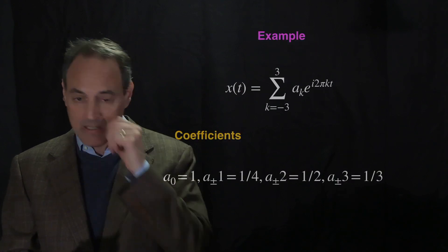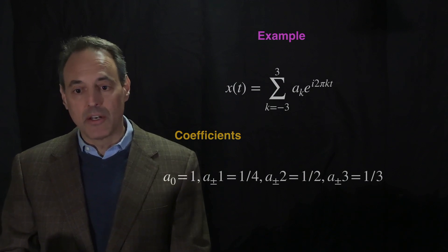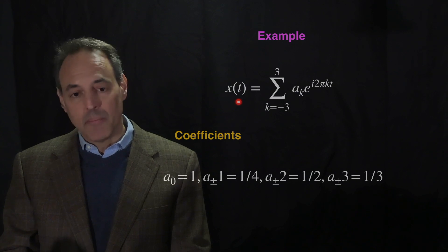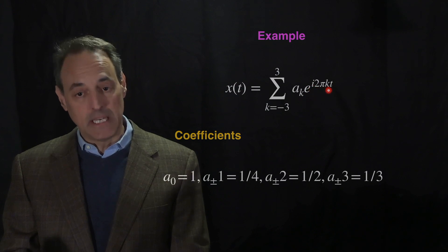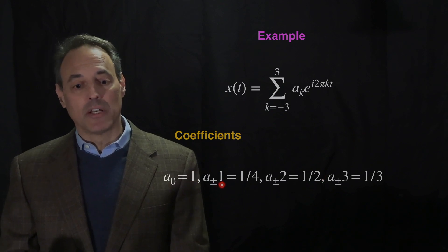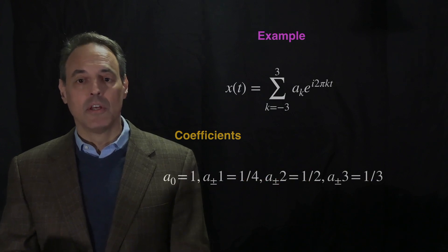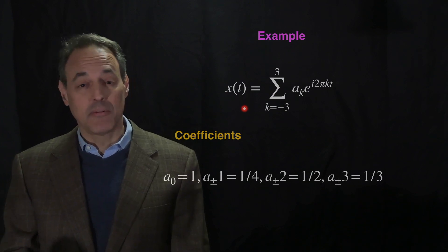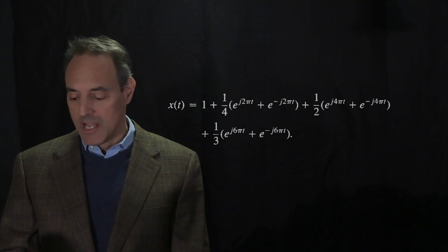Let's do an example. Here's a signal: x(t) defined from -3 to 3 with Fourier modes a_k · E^(i·2π·k·t). The Fourier coefficients are: a₀ = 1 (DC component), a(±1) = 1/4, a(±2) = 1/2, and so forth. These coefficients are symmetric, which means the signal is actually going to be real. You can write this expansion out explicitly — and notice that you get cosine terms, since E^(i·something) + E^(-i·something) is a cosine.